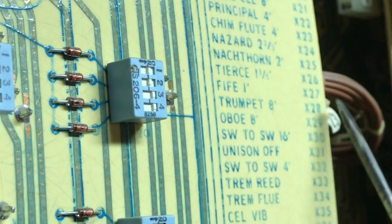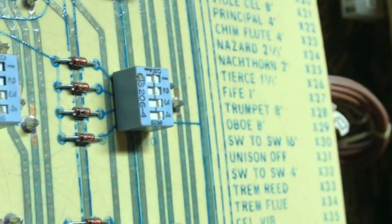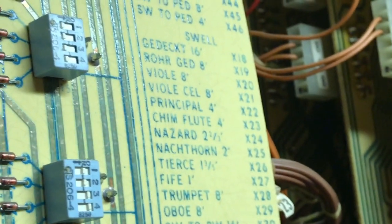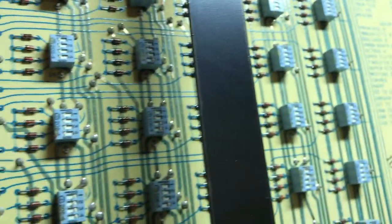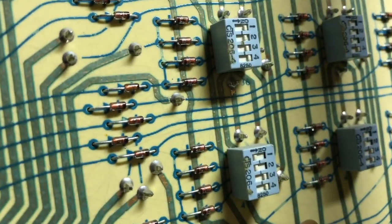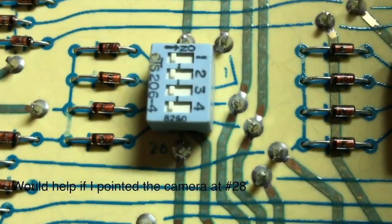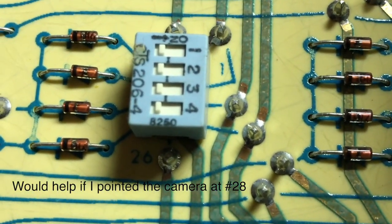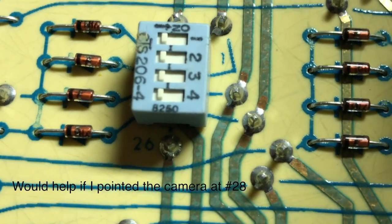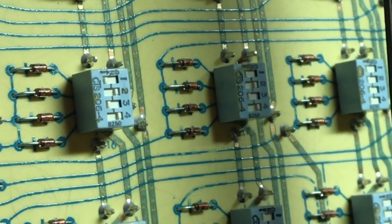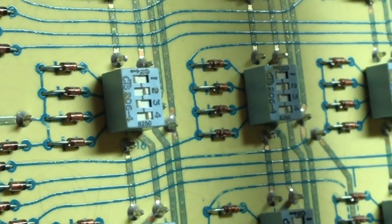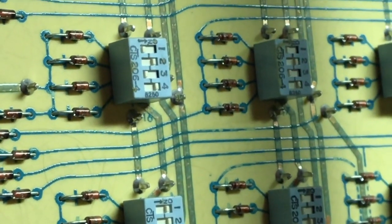So here I have number 28, 8 foot trumpet on the swell division, and so I'm going to find number 28. These are numbered horizontally, how weird, and I'm just going to turn on number 3 there. And I've also turned off the swell to great couplers, and the swell to pedal couplers.